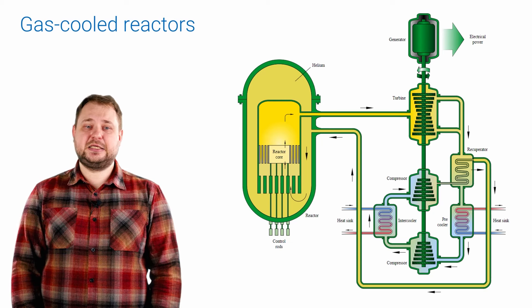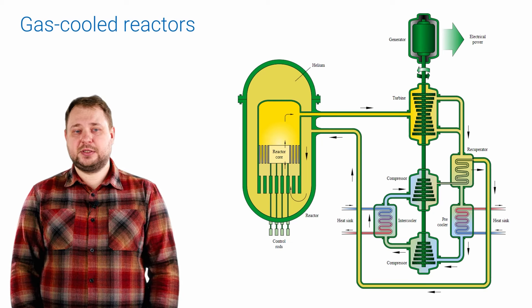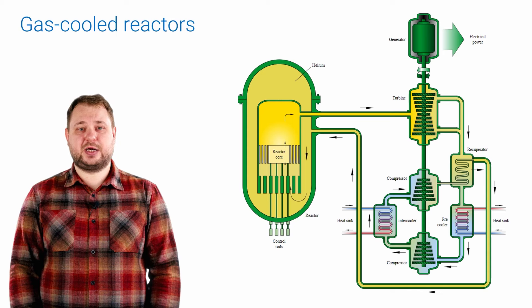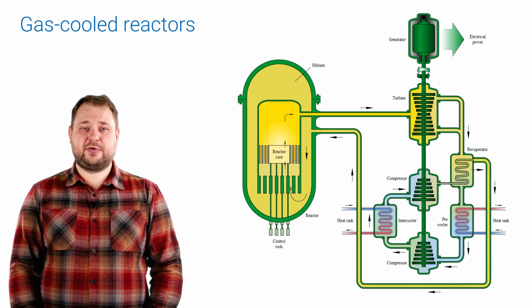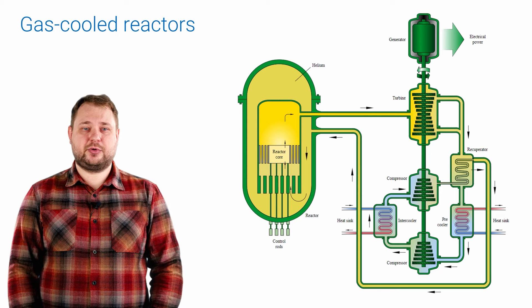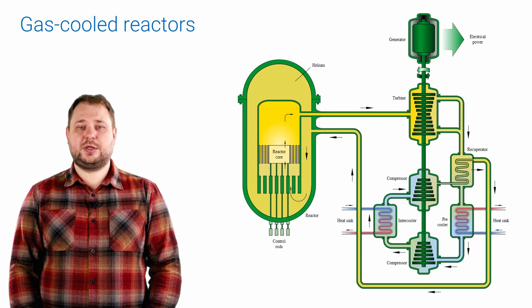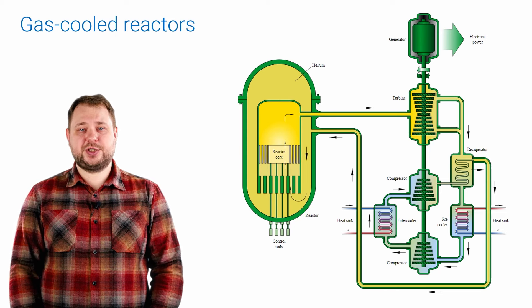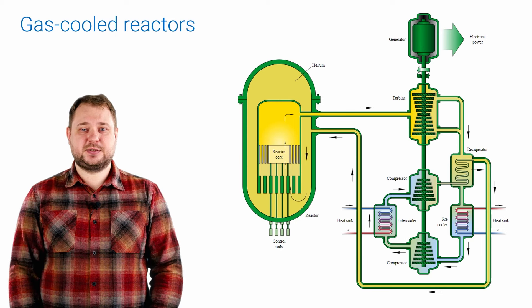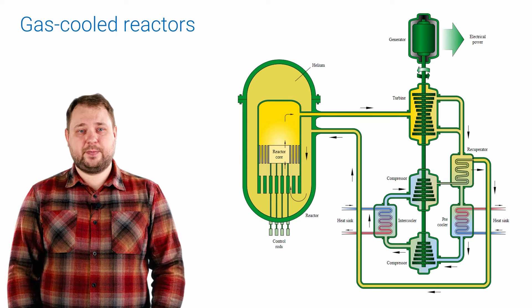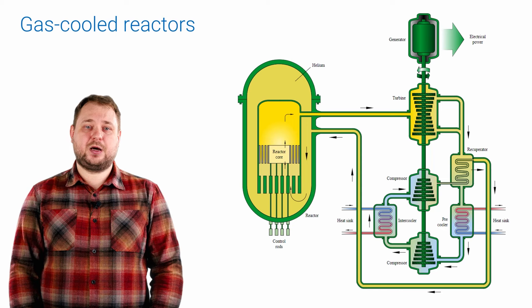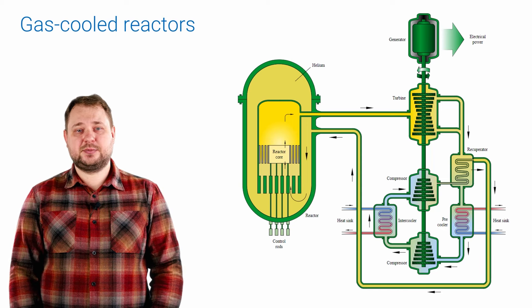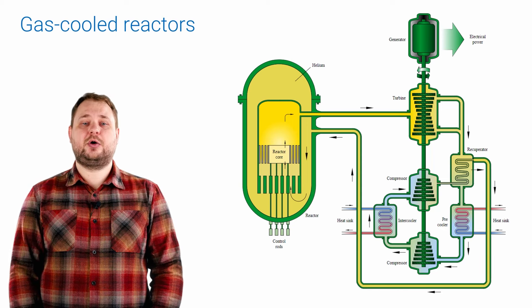Advanced versions of GFR reactors use ceramic uranium monocarbide fuel in the core, allowing operation at very high temperatures. The structure of such fuel makes it possible to achieve a high density of uranium atoms per unit volume of fuel.